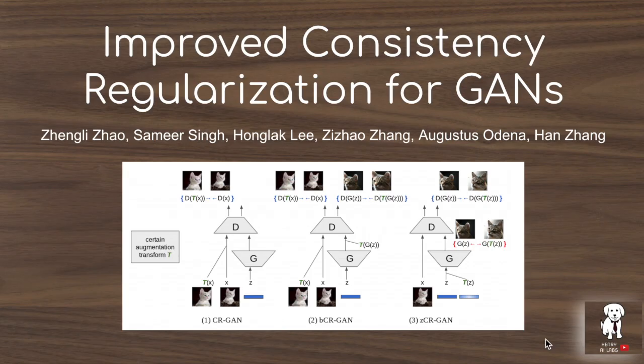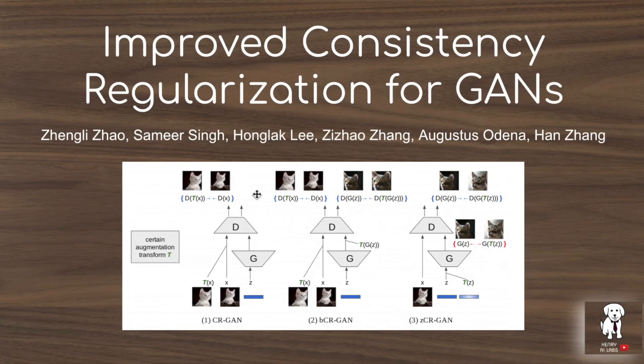Consistency regularization has been a popular idea to strengthen the training of deep neural networks by requiring them to be consistent in their predictions, such as predicting the same class label of an image after it goes through a transformation like rotating it 90 degrees. This paper builds on previous work applying consistency regularization to training GANs, achieving new state-of-the-art results. It's an easy technique to stack on top of existing GAN techniques and easy to understand compared to things like spectral normalization.